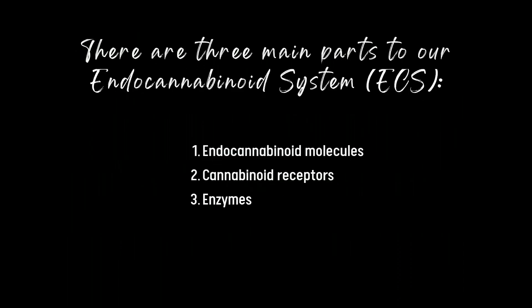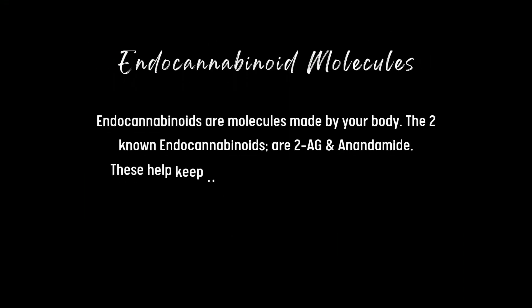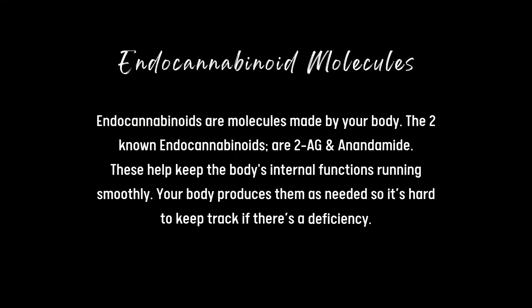There are three main parts of the endocannabinoid system: endocannabinoid molecules, cannabinoid receptors, and enzymes. Endocannabinoids are molecules made by your body. The two known endocannabinoids are 2-AG and anandamide. These help keep the body's internal functions running smoothly. Your body produces them as needed, so it's hard to keep track if there's a deficiency.